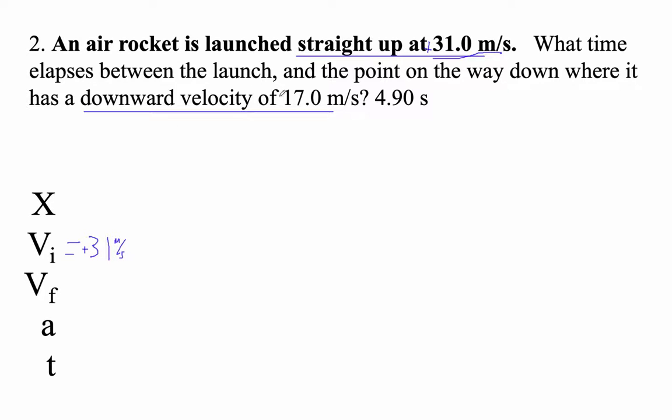Final velocity is a downward velocity, so we're going to make that negative. So the final velocity is negative 17.0 meters per second, and you have to put that minus sign on there because it's down.